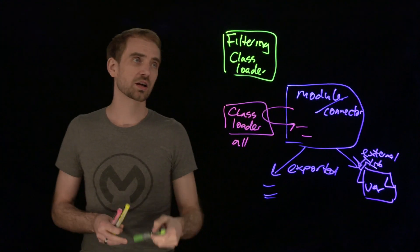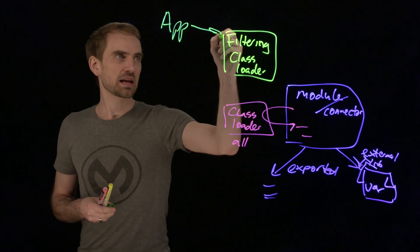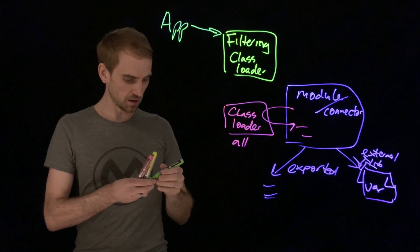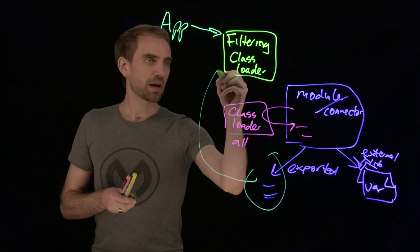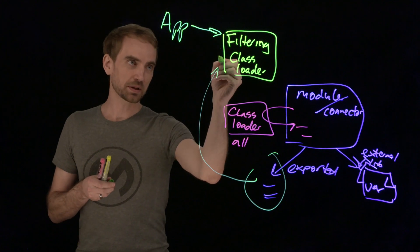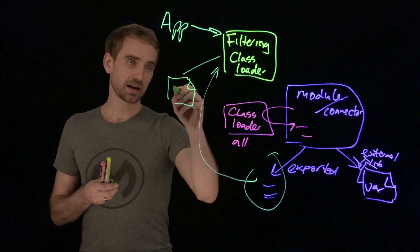When you're writing your application code, you've got your app and the app code will see the filtering class loader. It takes whatever you've exported and makes that available and shows whatever the application because the application is going to have its own libraries as part of it.